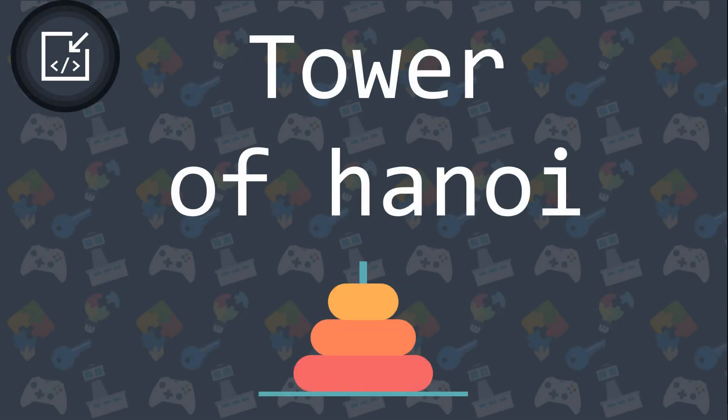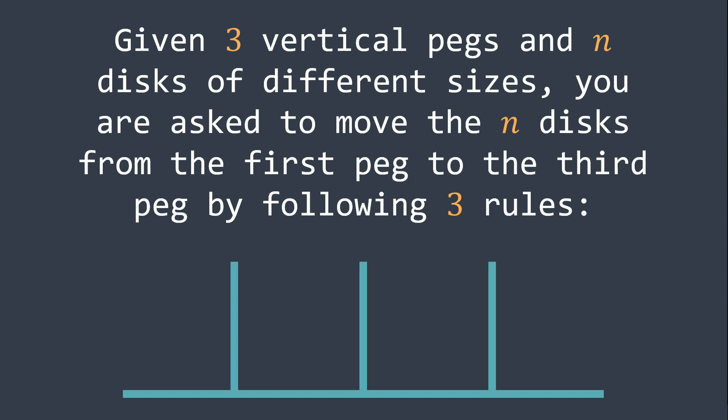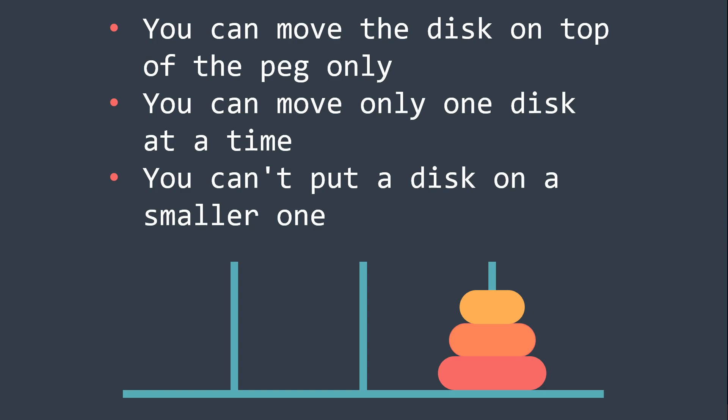Welcome to this new InsideCode video where we will see how to solve the Tower of Hanoi puzzle. The Tower of Hanoi puzzle says: given 3 vertical pegs and N disks of different sizes, you are asked to move the N disks from the first peg to the third peg by following 3 rules. You can move the disk on top of the peg only, you can move only one disk at a time, and you can't put a disk on a smaller one. If you want to try playing the puzzle, I'll put a link in the description to give it a try.